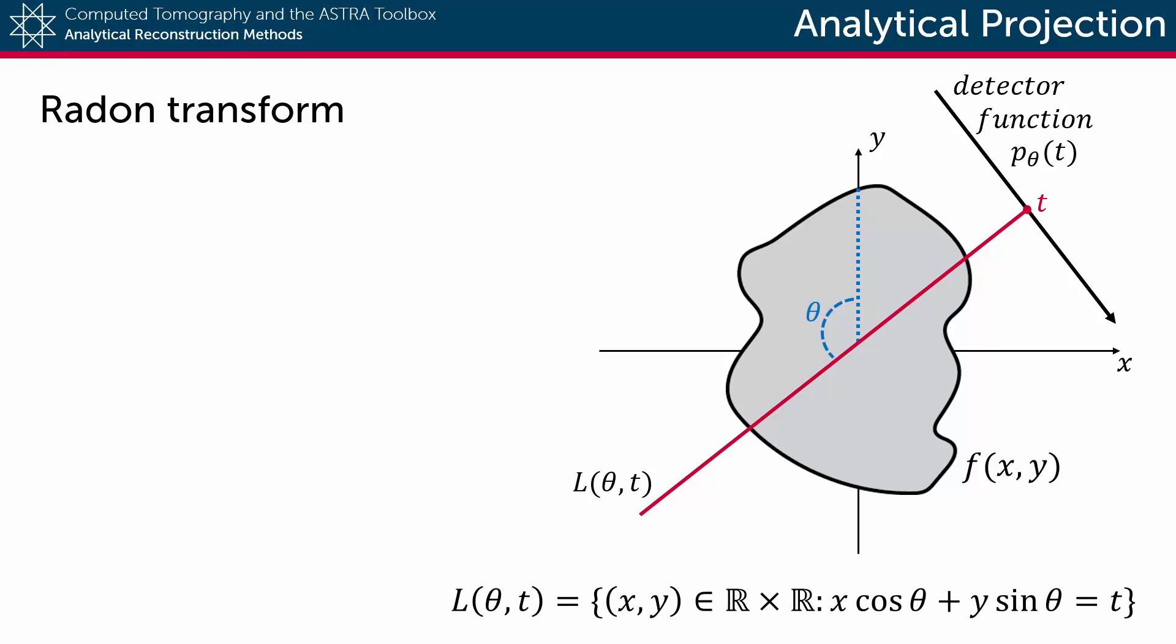This line is basically a collection of all the points in the coordinate system for which x times the cosine of θ plus y times the sine of θ equals t.